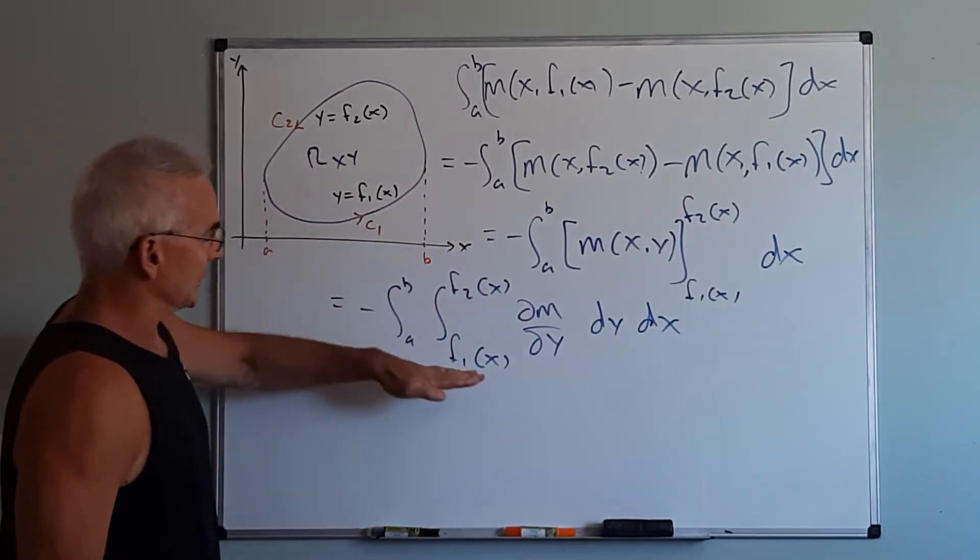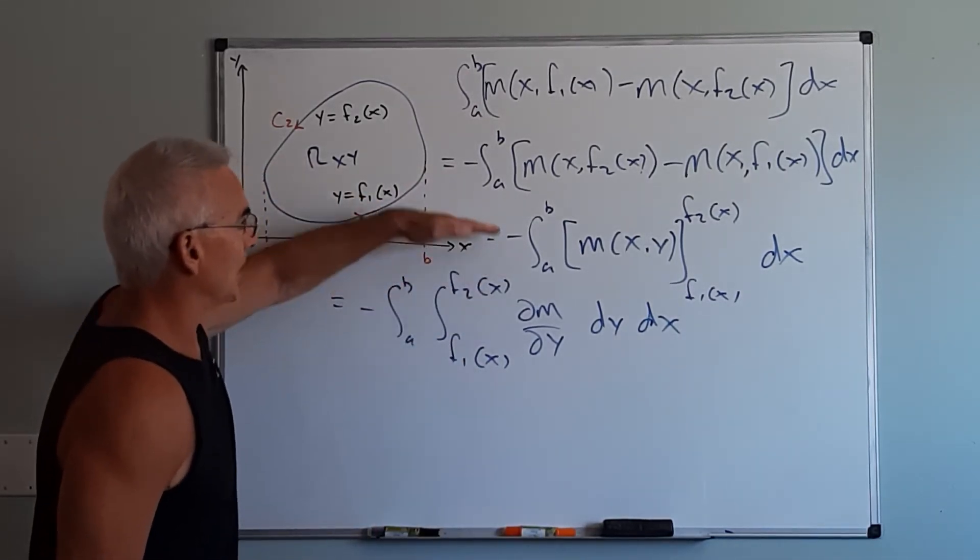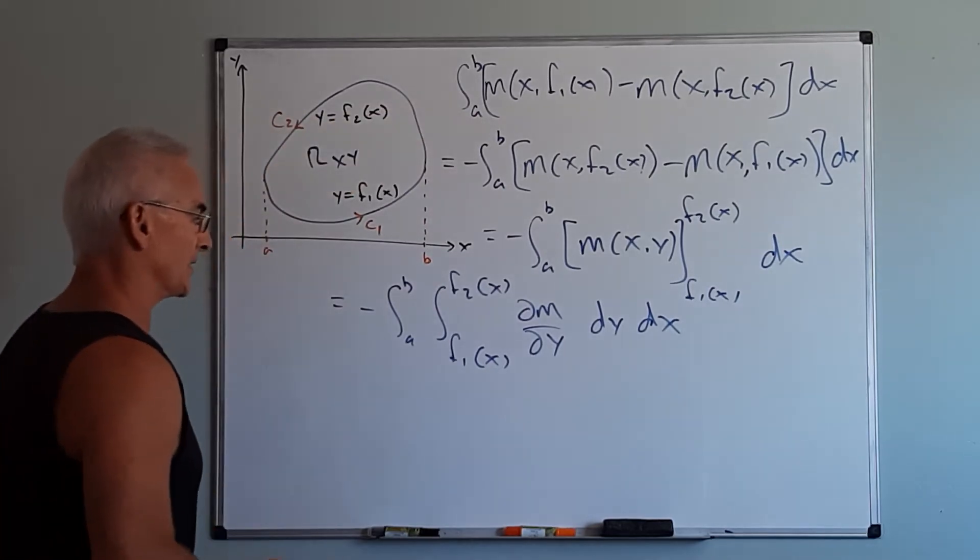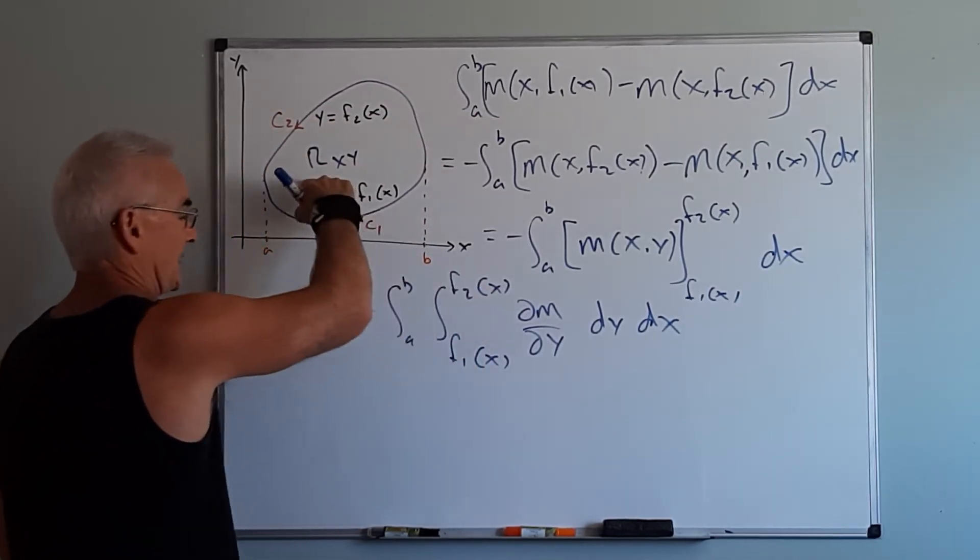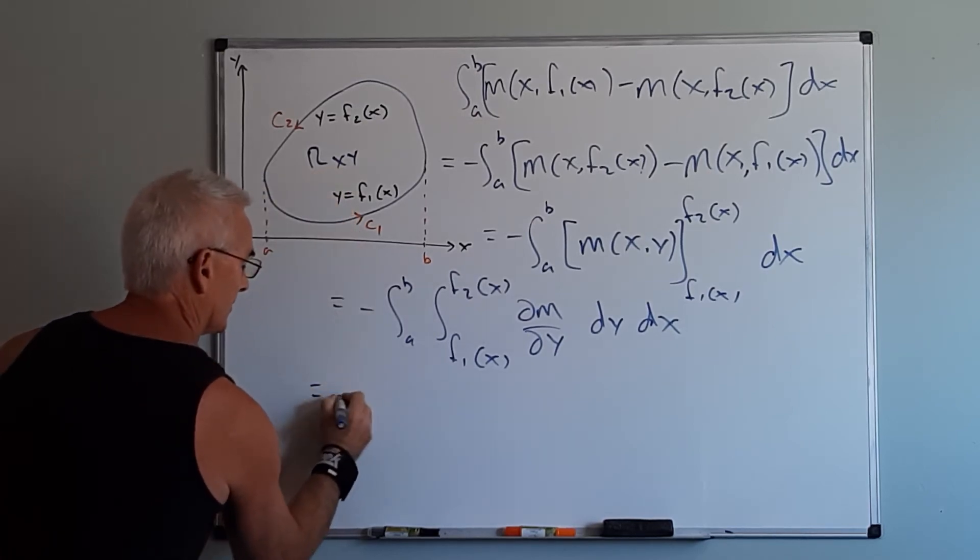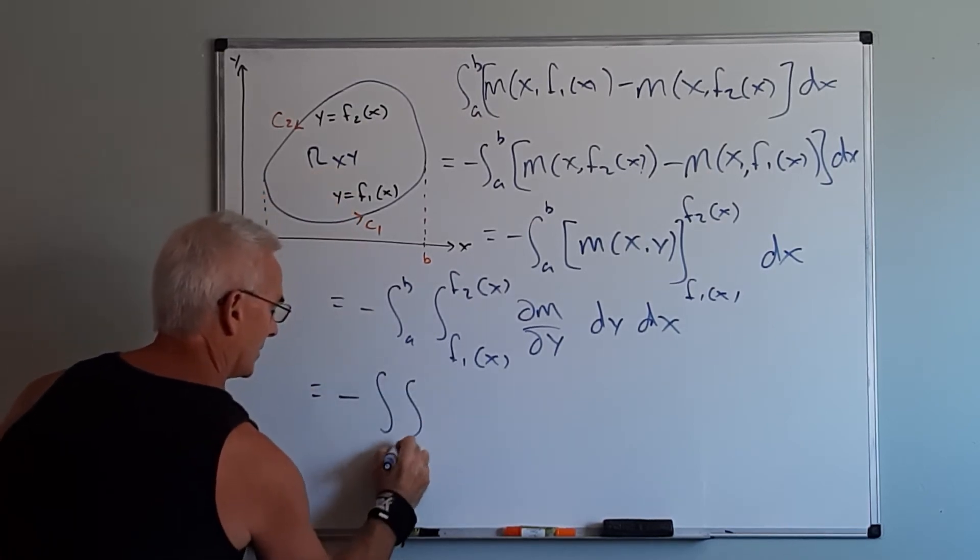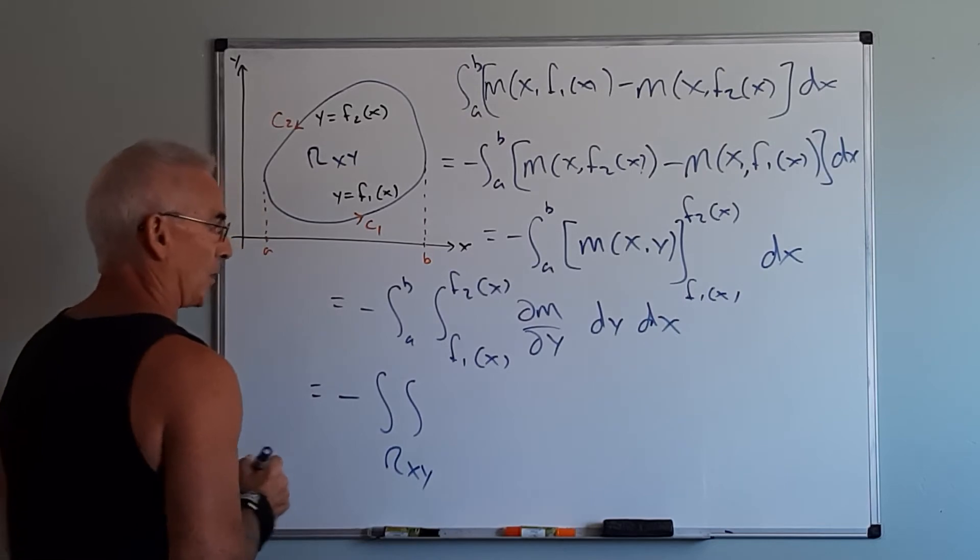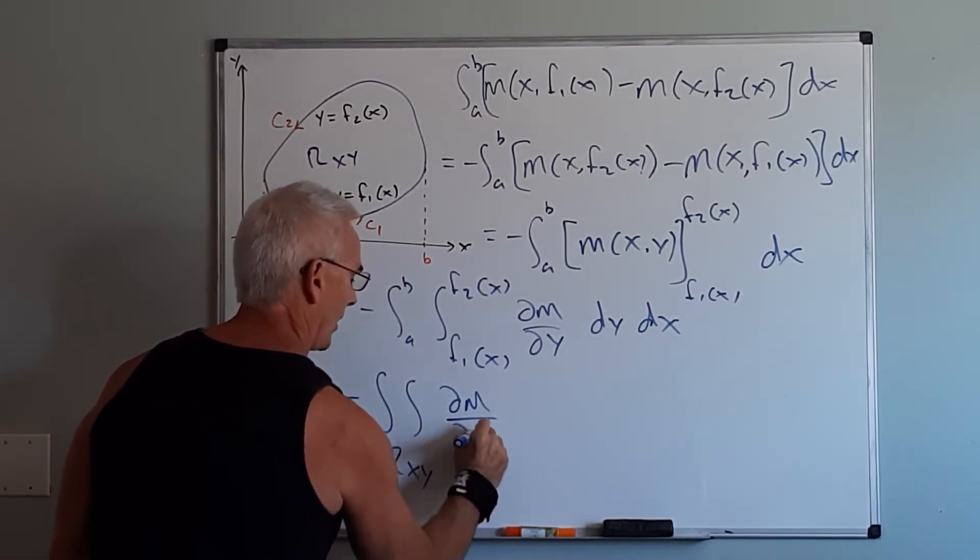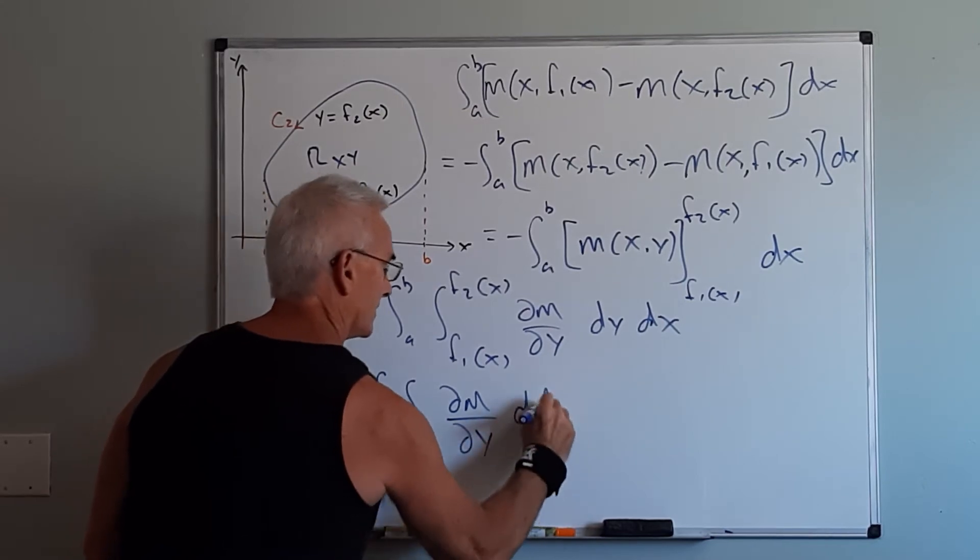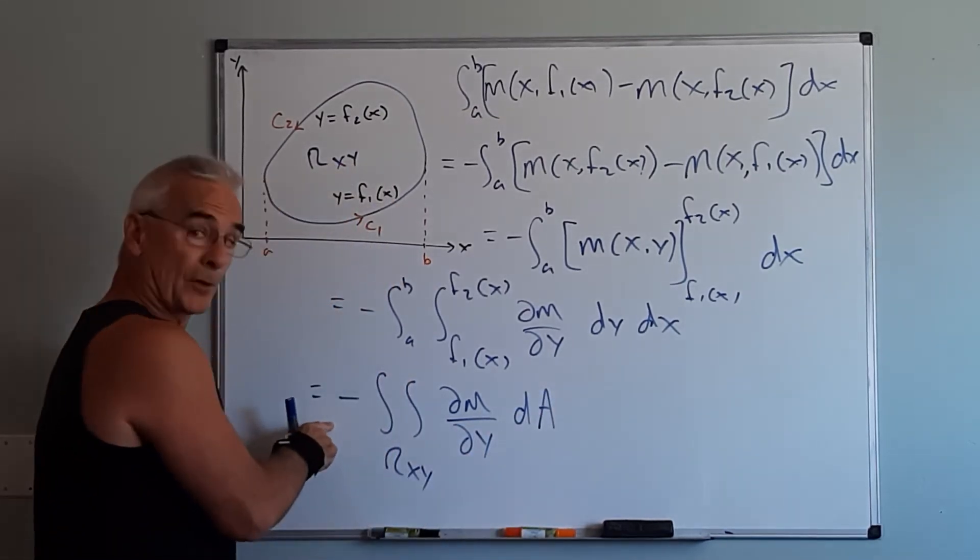So if you follow the logic, if I work backwards I realize I would come up with all of these things. Finally if you look at this right here, this is the region in the xy plane. So this can be summarized as the region in the xy plane of the partial of m with respect to y dA. And this concludes the first half of the proof.